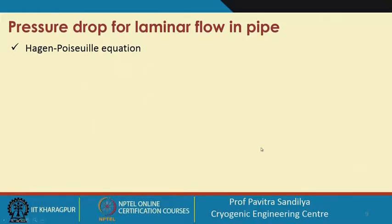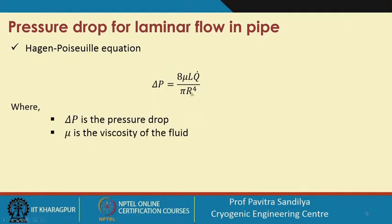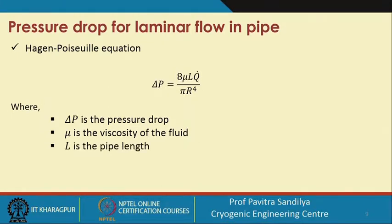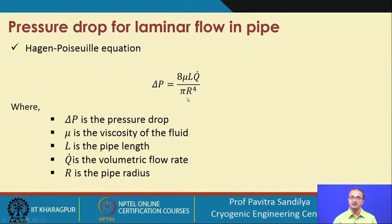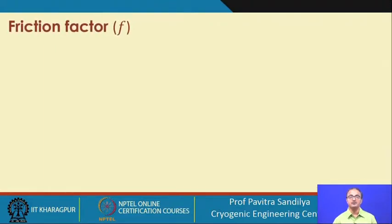For laminar flow, many expressions can be derived theoretically. One very commonly used expression is the Hagen-Poiseuille equation. In this expression, ΔP is the pressure drop, μ is the fluid viscosity, L is the pipe length, Q₀ is the volumetric flow rate of the fluid, and R is the pipe radius. This expression is used to find out the pressure drop. In fact, the Hagen-Poiseuille equation is also used to determine the viscosity of a fluid through a pipeline.